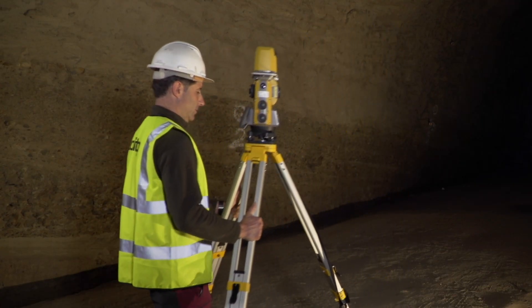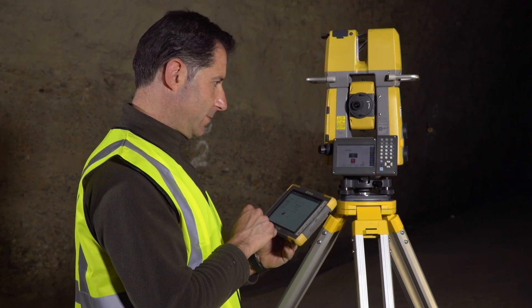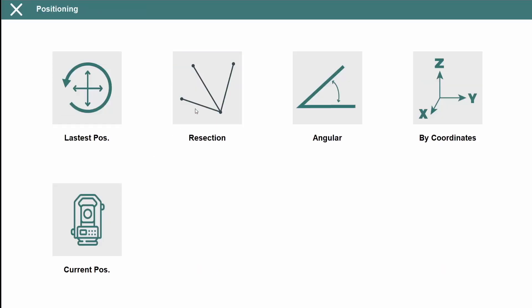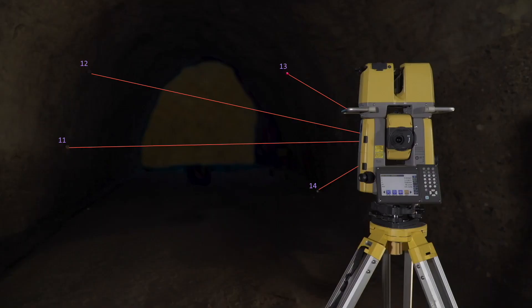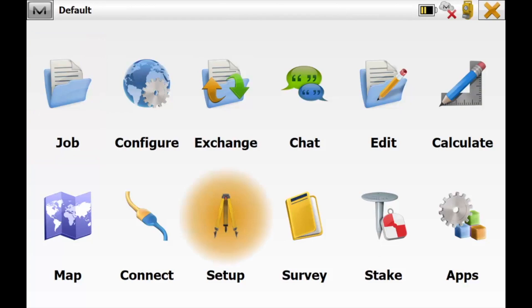As a first step, the instrument must be positioned and oriented by coordinates, angle or resection. You can also get the current positioning performed by Topcon Magnet Field data collection software.